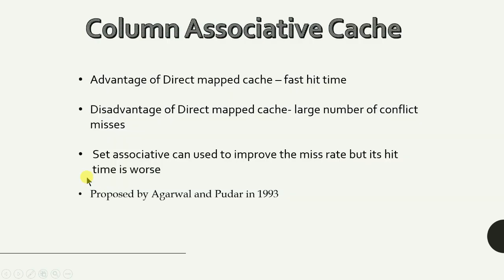Our main topic in this video is column associative caches. As we've seen, the main advantage of direct map caches is fast hit time, since the address is directly mapped to one cache block. The disadvantage of direct map caches is a large number of conflict misses, which I'll address in the next slide.